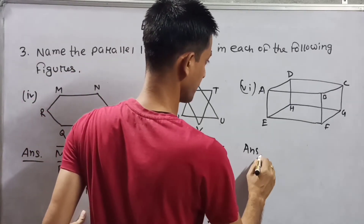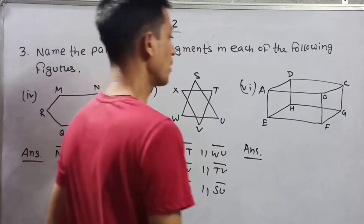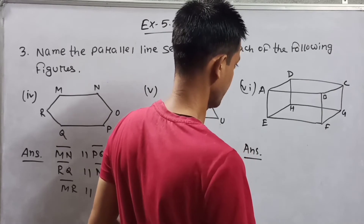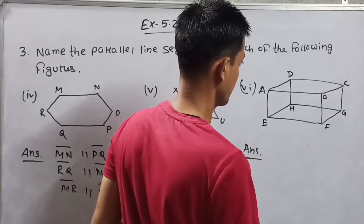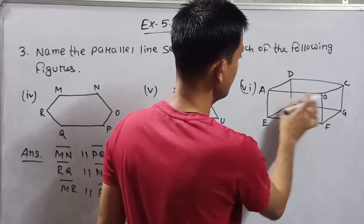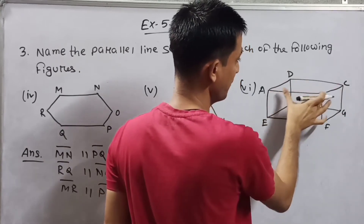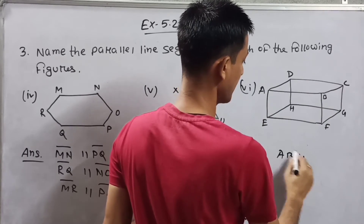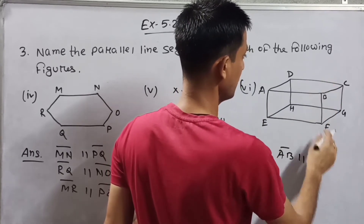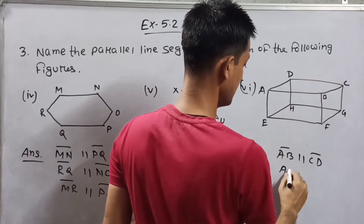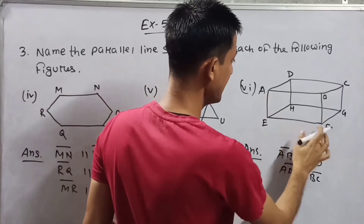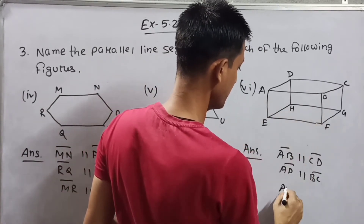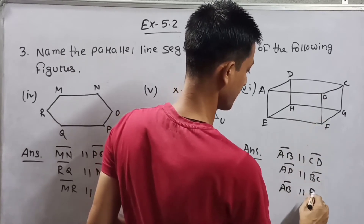Next we have a cuboid. From face ABCD, you can see AB is parallel to CD.